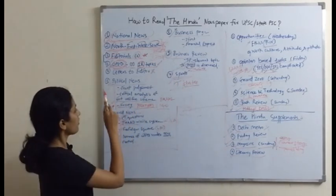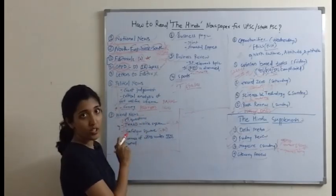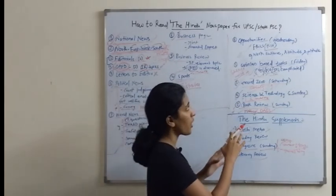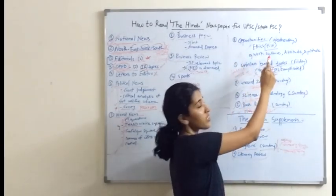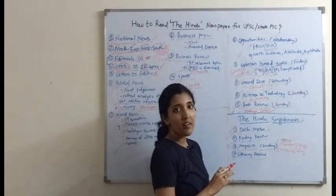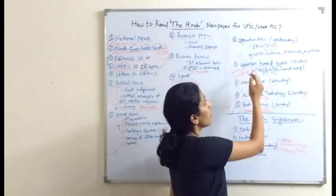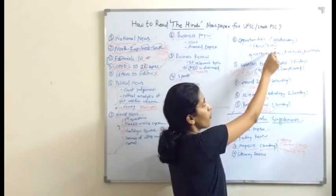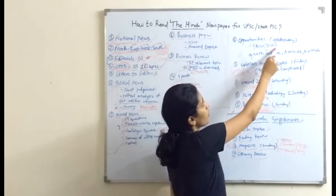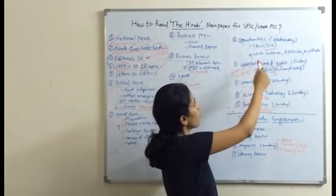These are the major sections of the Hindu covered on a daily basis. Apart from these, there are certain other sections which come on particular days. There is Opportunity Space, which comes on Wednesday. It covers career and job-related opportunities and related articles. This is basically helpful for the ethics paper — Paper 4 — because certain topics relate to the Paper 4 syllabus, like work culture, attitude, and aptitude.